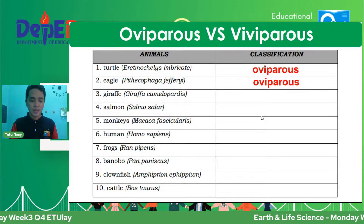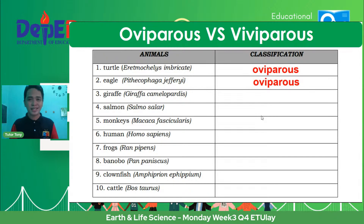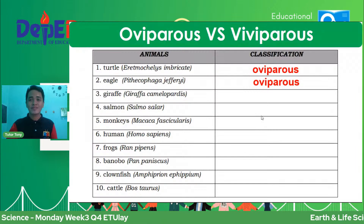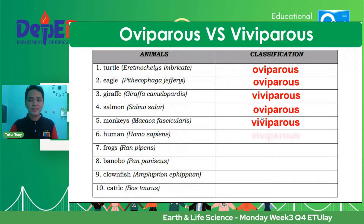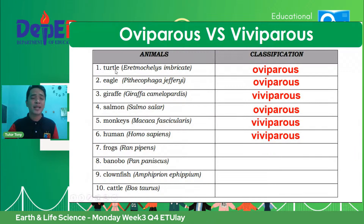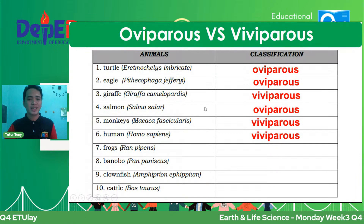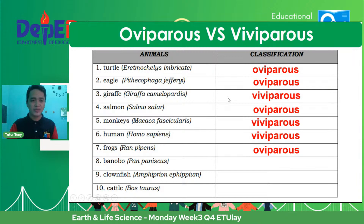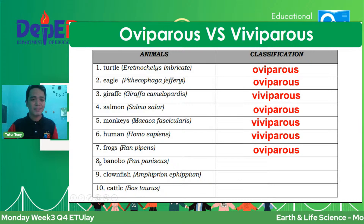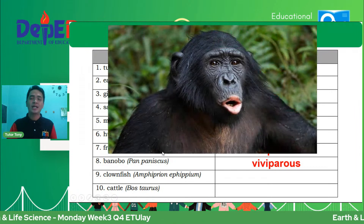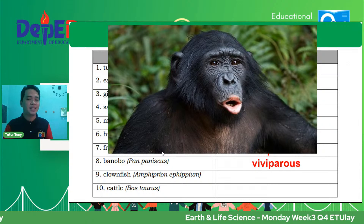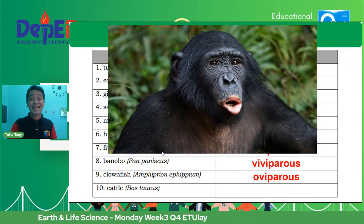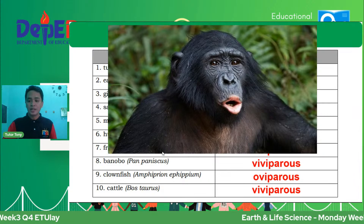Let's answer the oviparous versus viviparous activity. Fertile — oviparous. Eagle — oviparous. Giraffe — viviparous. Salmon — oviparous. Monkey — viviparous. Human, homo sapiens — viviparous. Frogs — oviparous. The Bonobo, scientific name Pan paniscus — viviparous, it's a mammal, like a small version of the chimpanzee. Clownfish — oviparous, they lay eggs. Cattle — viviparous.